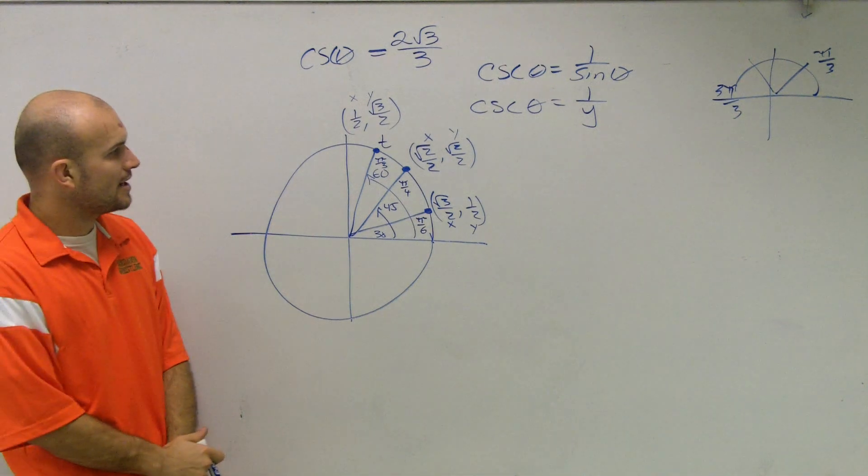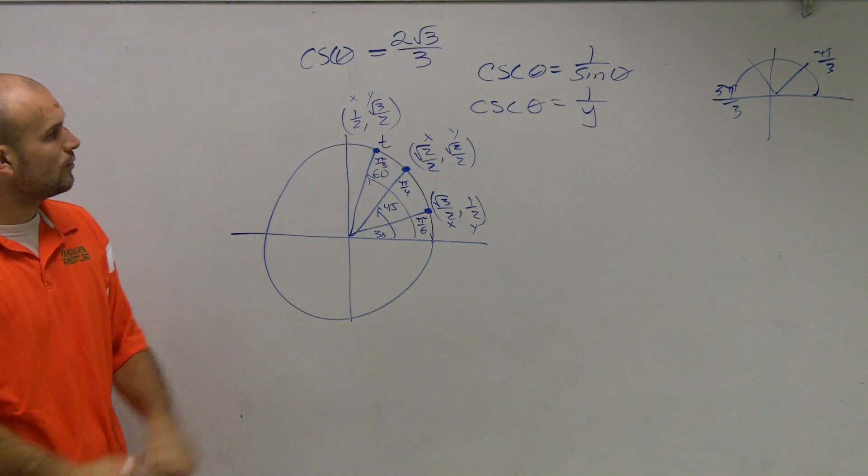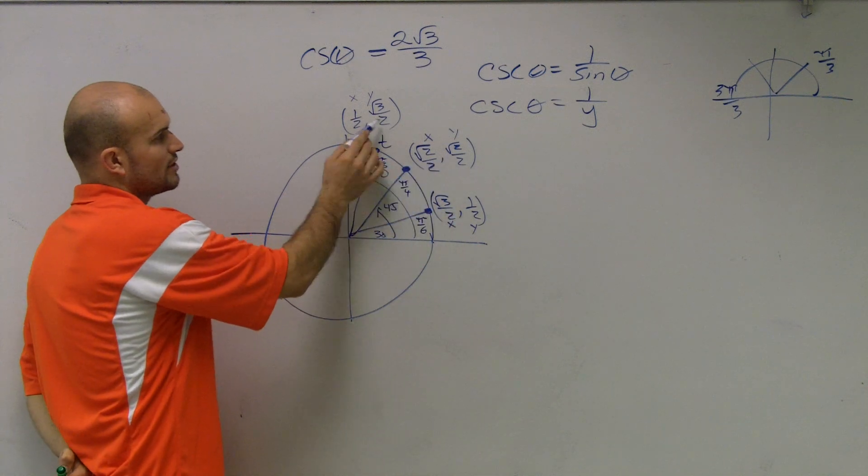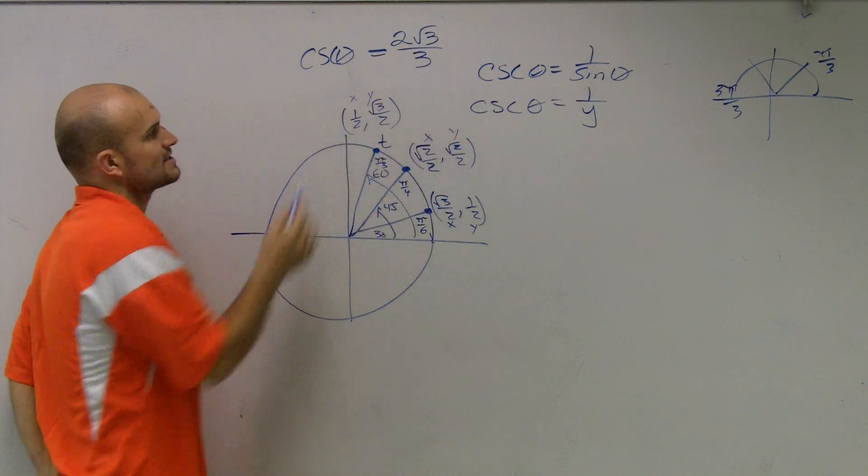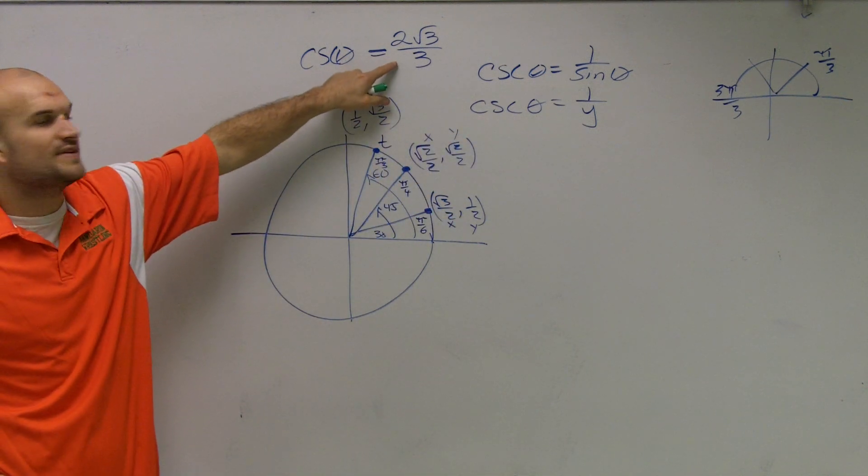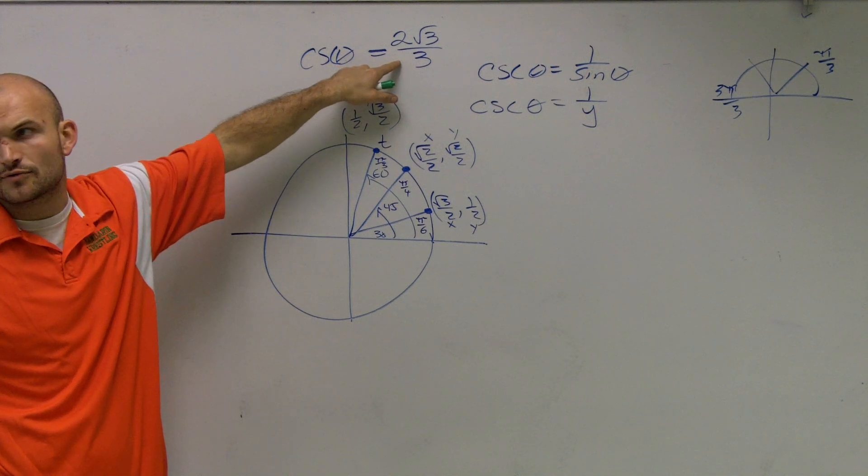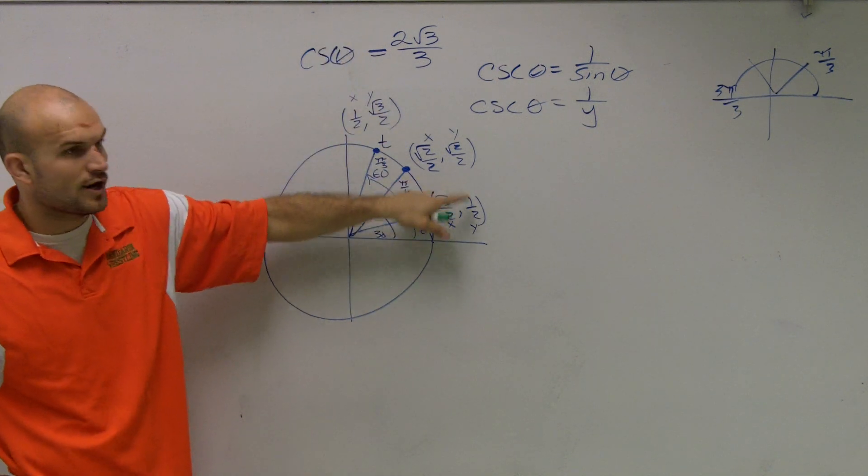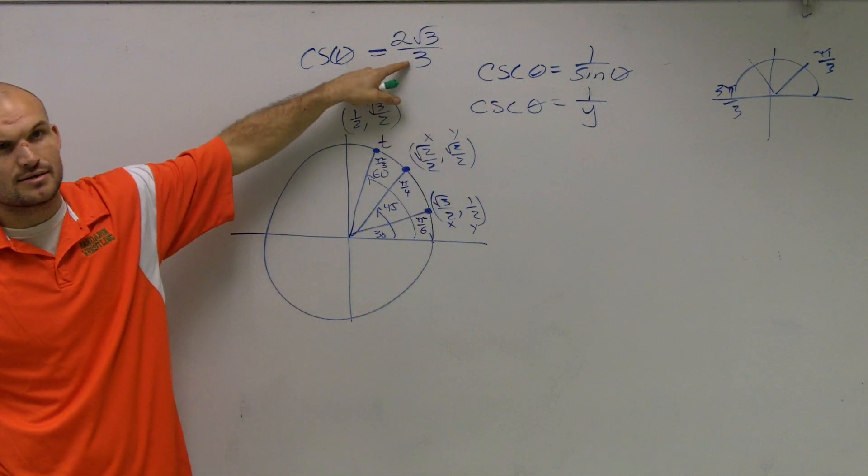So I need to look at this and say, which one of these could I rewrite as 1 over y is going to give me this final answer of 2 radical 3 over 3? If you think about this, if you say 1 over 1 half, is that going to give me that answer? No.